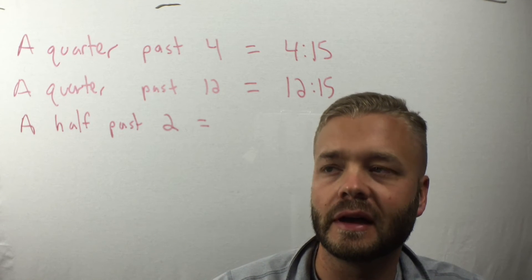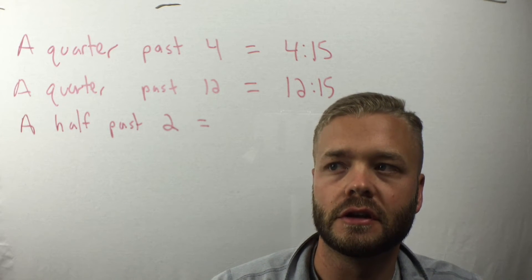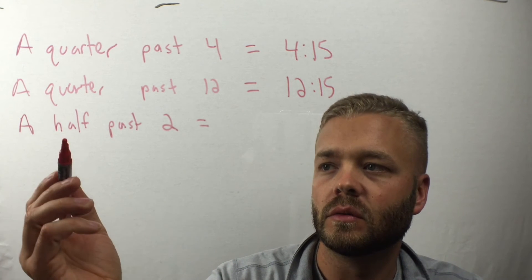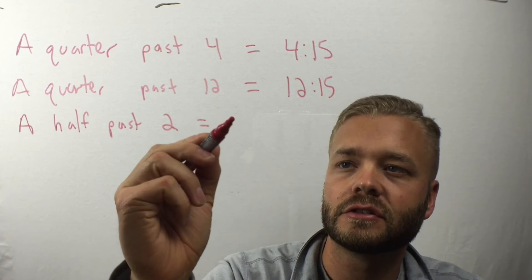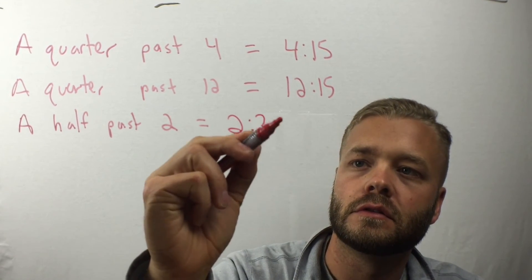Okay, what about a half past? Let's say we're going to have lunch at a half past two. Well, what's half an hour? 30 minutes. So we've got to go half an hour past two. 2:30.